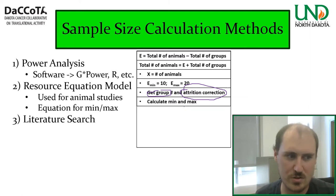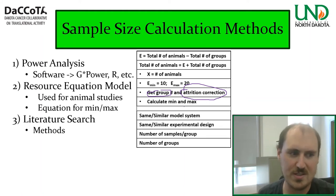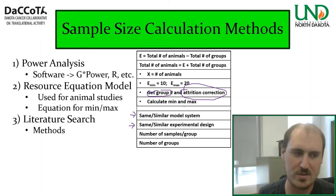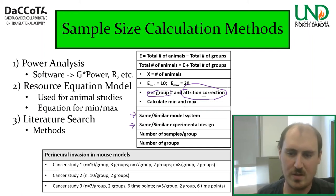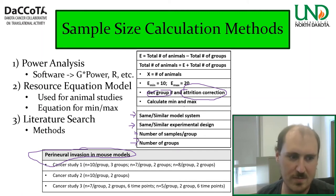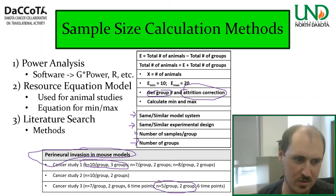Number three: a literature search. This isn't power analysis so much as asking: what are other people in my field doing, and am I in the same ballpark? You search your journals for articles with the same or similar model system and experimental design, then pull out the number of samples per group and the number of groups. For example, in a perineural invasion mouse model search across three studies and multiple experiments, the lowest was 5 per group and the highest was 10 per group. You could even calculate the average number per group across all studies.